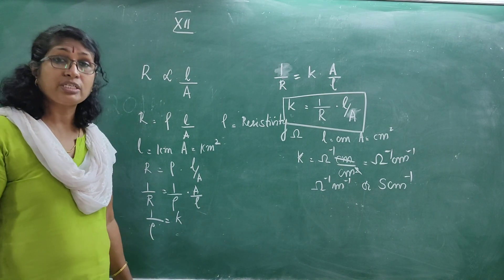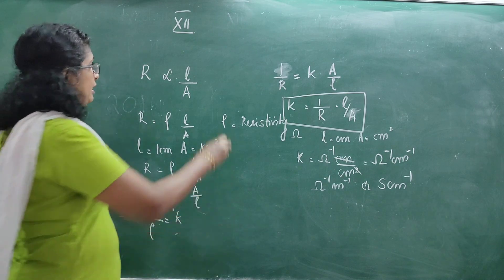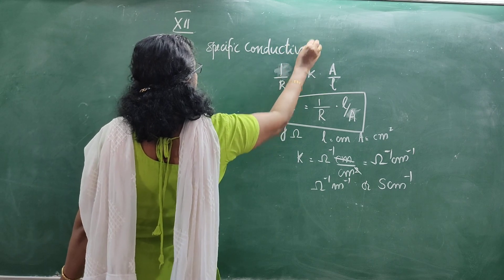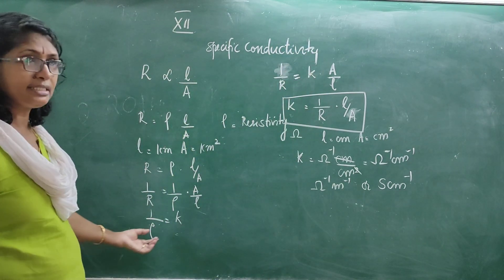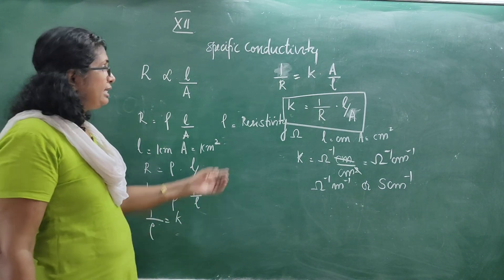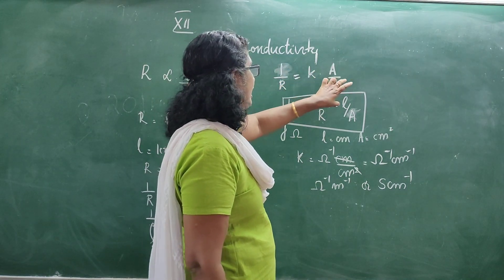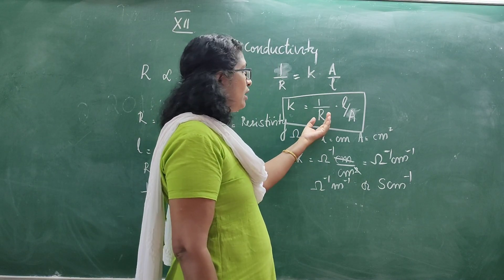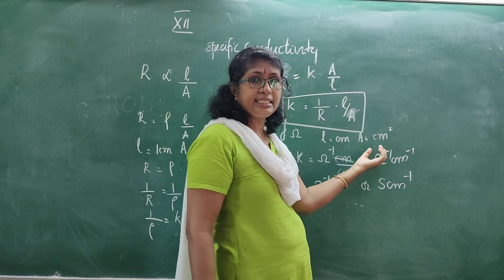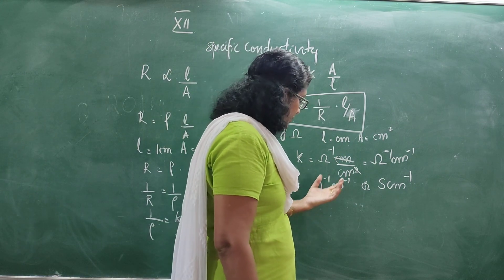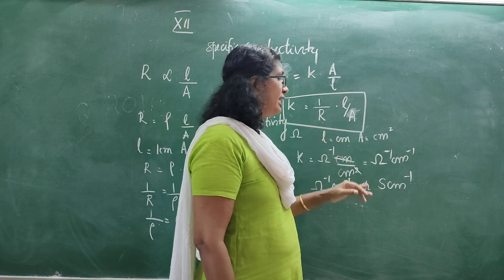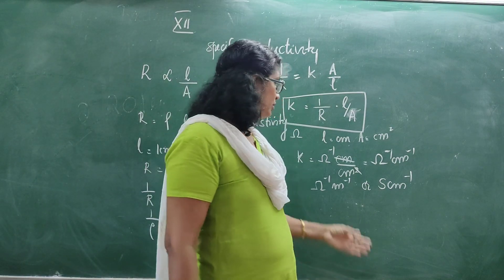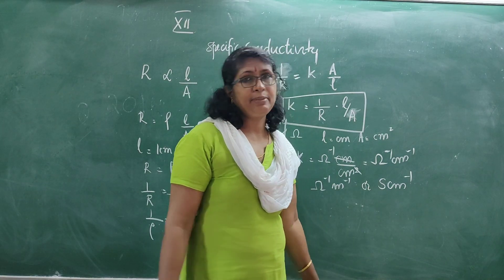The inverse of resistivity is called the conductivity or specific conductivity — also written as kappa (κ). So K = (1/R) × (L/A). If R is in ohms, L in centimeters, and A in centimeter square, then K is ohm⁻¹ centimeter⁻¹; in SI units, ohm⁻¹ meter⁻¹. Ohm inverse is also called siemens, so conductivity has units of siemens centimeter⁻¹.